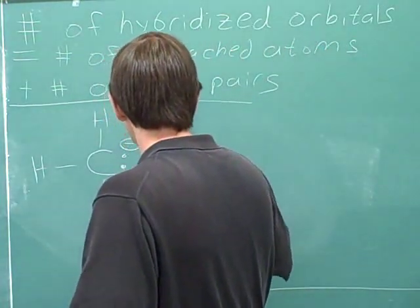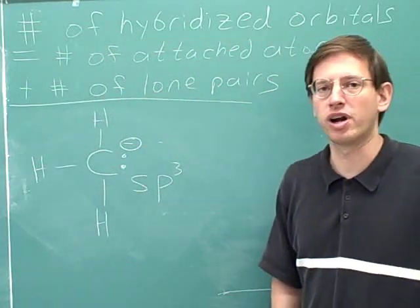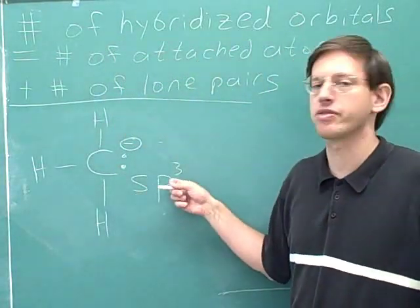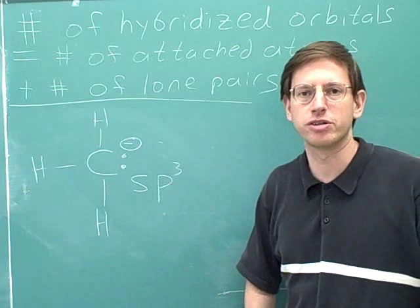That makes the carbon an sp3 with four hybridized orbitals. 1s and 3ps gives us four hybridized orbitals overall.